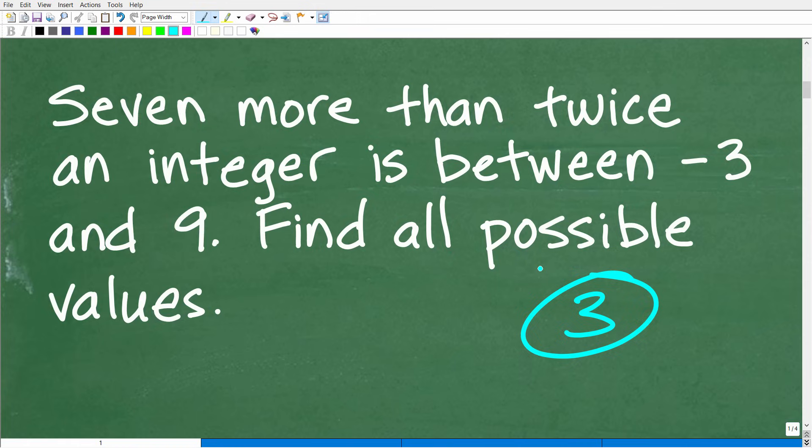This problem involves this word right here: integer. Seven more than twice an integer. We have to be crystal clear on what an integer is, because if we don't understand what an integer is, we're not going to be able to figure out this problem. I'll explain what an integer is here in a second.